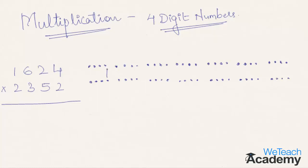In the first step, you need to multiply the units digit with the units digit of the other number. So in this case 4 into 2 is 8, so take the result 8 in the answer. In the second step, the units digit is to be multiplied with the tens digit of the other number and vice versa. Here 5 into 4 is 20 and 2 into 2 is 4, so 20 plus 4 gives the result as 24. The units digit 4 is taken in the final result and 2 is carried to the next step.